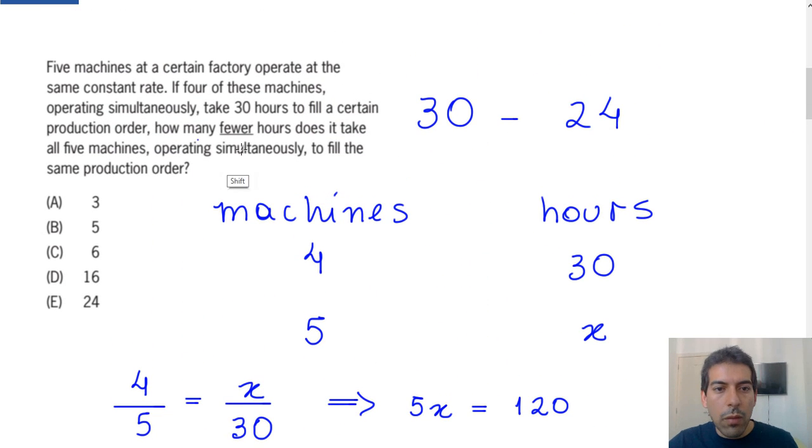So the answer to how many fewer hours does it take five machines operating simultaneously to fill the same production order is 30 minus 24. We get 6 hours. So the answer to this question is letter C. Let's go to the last one.